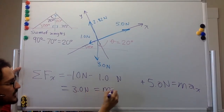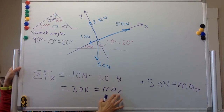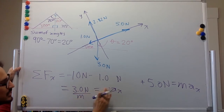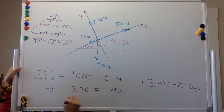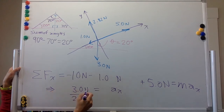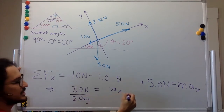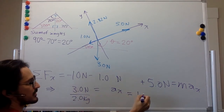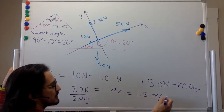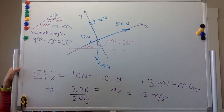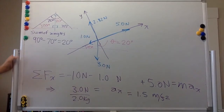That's equal to mass times acceleration in x. We divide by the mass to find the acceleration. The mass we were told in the problem is 2 kilograms. The units are meters per second squared, and the value is 1.5 — positive because the 5-newton force is greater — so 1.5 meters per second squared.